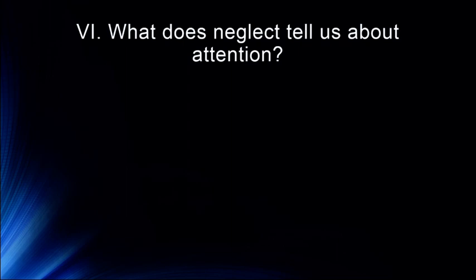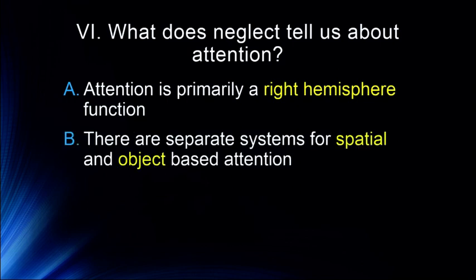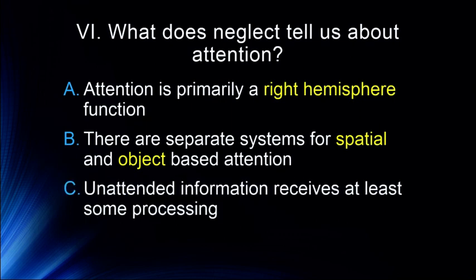So what is neglect telling us? What are these patients telling us about attention? Certainly visual attention or spatial attention is primarily a right hemisphere function. There are separate systems for spatial and object-based attention — based on the fact that we get hemispatial neglect, we can get object-based neglect, and we can also get object-based attention disorders like simultagnosia. We know that unattended information receives at least some processing, particularly in neglect patients, as we can see from priming studies. This all ties back to models we've discussed and even back to dichotic listening tasks.